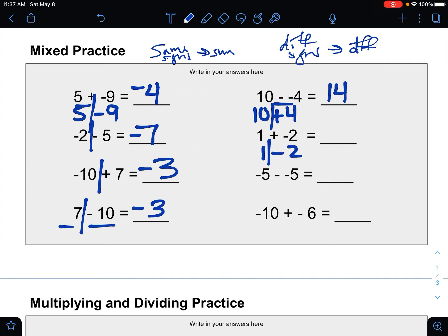1 plus negative 2 is just 1 minus 2. The negatives, so this is different signs, find the difference. The negatives have 1 more, so it's negative 1.